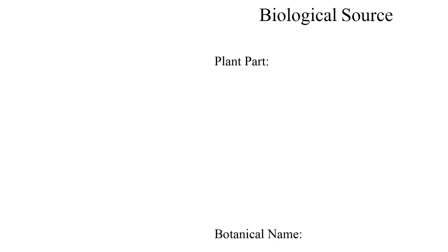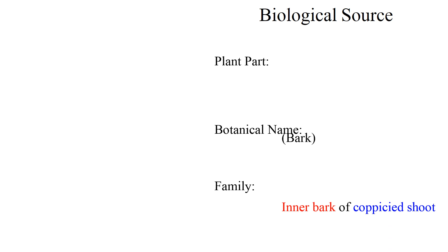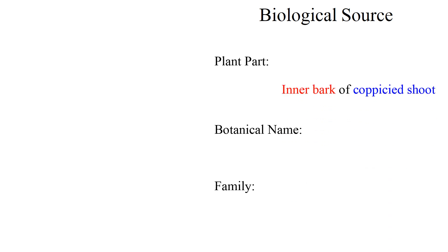Here we will begin with biological source. In biological source we will see three points: plant part, botanical name, and family. The plant part used in case of cinnamon is bark, and more accurately it is the inner bark of coppiced shoot. Now the questions are: what is inner bark and what is coppiced shoot?